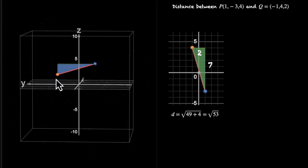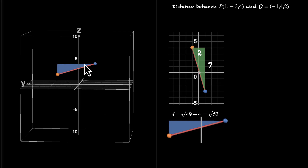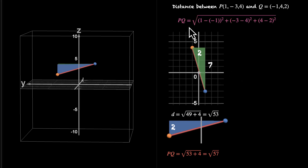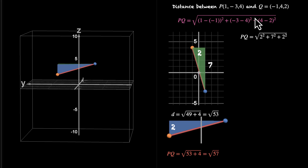Now we use Pythagoras again for the second triangle. This length is √53, and the difference in Z coordinates (4 and 2) is 2. So: 53 + 4 = 57, giving us √57. This is the distance between P and Q. Let's double-check using the formula: the differences are (1 - (-1)) = 2, (-3 - 4) = -7, and (4 - 2) = 2. So: 2² + 7² + 2² = 4 + 49 + 4 = 57. The answer is √57. This is faster, but the visual approach is more fun.